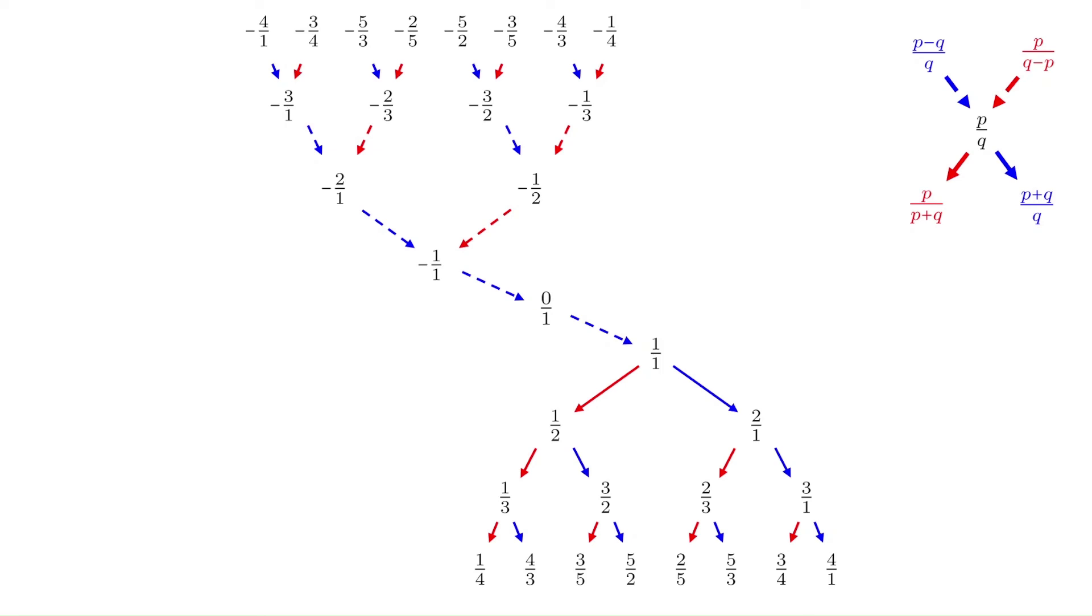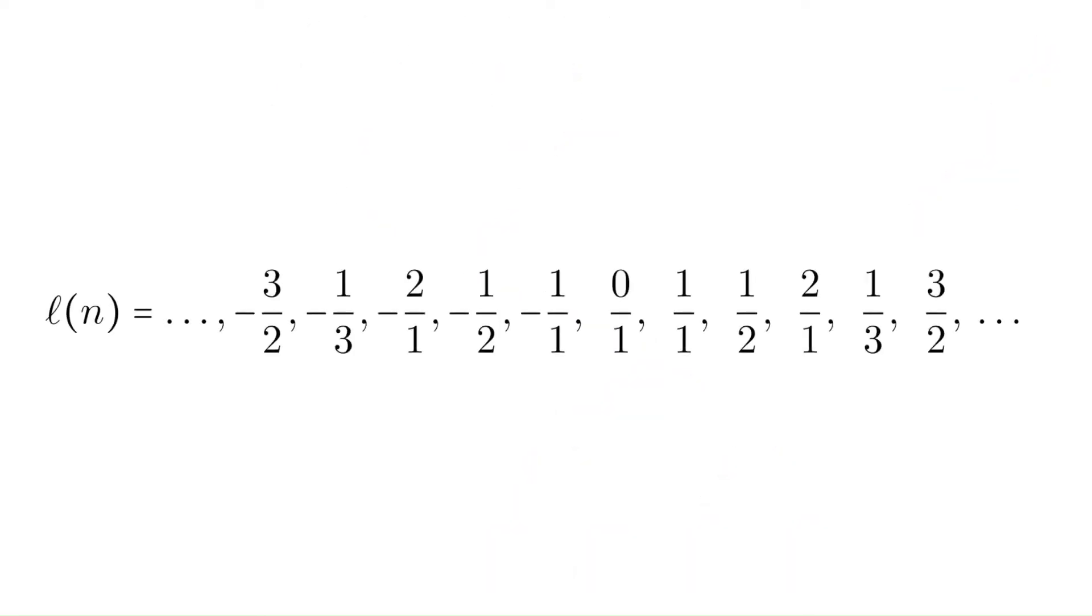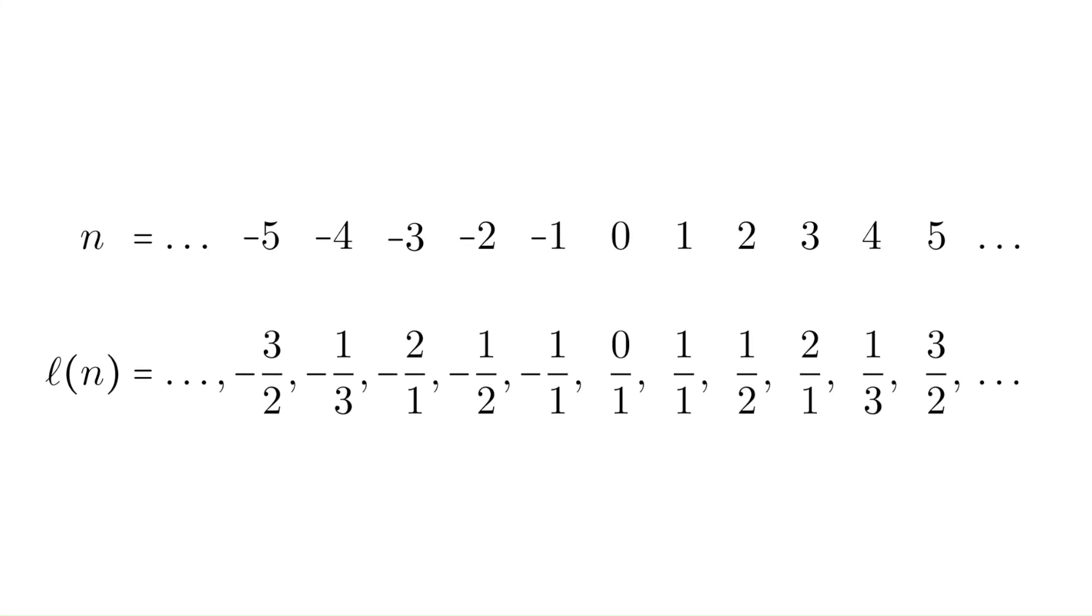By reading off the rows of this new double tree, we get an extended version of the Calkin-Wilf sequence, with the right indexing. And this is a true solution to our question from before, since it includes all of the rationals: negative and zero.